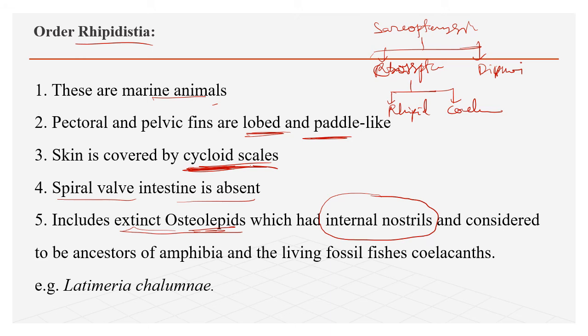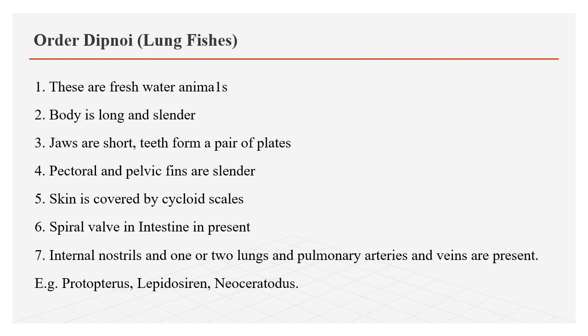Coelacanthini are living fossil fishes — Latimeria chalumnae being the example. Osteolipids are an extinct group while coelacanths are living fossils. Coming to the next order, Dipnoi — these are lung fishes and are freshwater fishes.